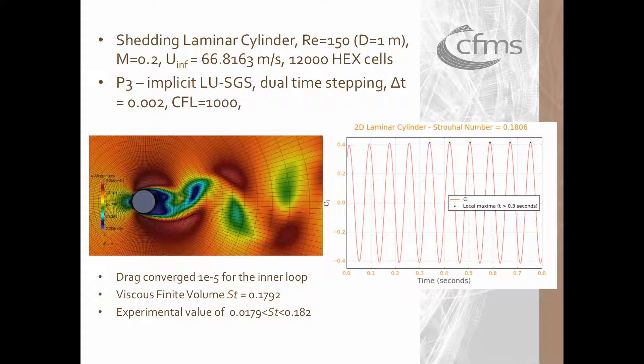and the mesh consisted of approximately 12,000 hex type cells which is fairly coarse considering that for the finite volume approach more than 250,000 cells were needed in order to capture the correct frequencies. The computed order was P2 and the time step chosen was 0.02 of a second.